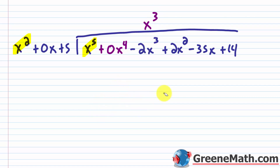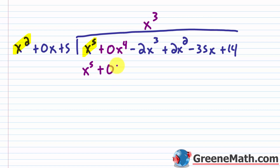Now the next step is multiply — D, M, S, B, R. I'm going to multiply x cubed by the whole divisor. x cubed times x squared is x to the fifth power. x cubed times 0x gives 0x to the fourth power — I'll put that in as a placeholder. And x cubed times 5 is plus 5x cubed.